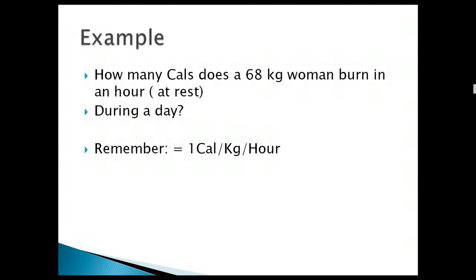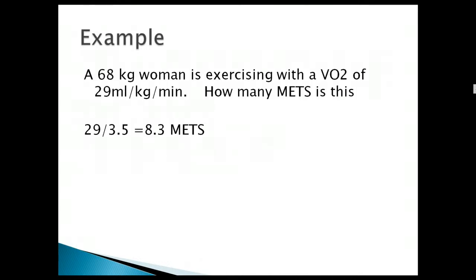For example, we can use MET and we can use these per kilogram per hour to tell us how much a 68 kilogram woman burns at rest. So that's very simple. It's just 68 times 1, 1 calorie per kilogram per hour at rest, 68 kilograms. That's what a woman that weighs about 68 kilograms burns just doing nothing. We're talking about bed rest, maybe sitting on the couch with your feet up, doing absolutely nothing. So how much does she burn during a day? Well, there's 24 hours in a day and she's at 68 calories per hour, so 68 times 24. That's very easy to calculate.